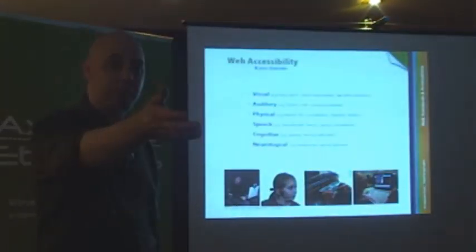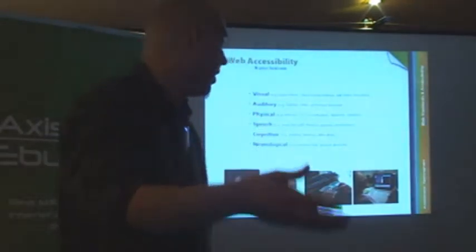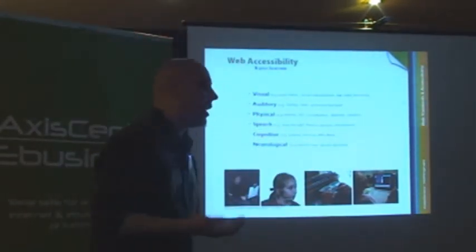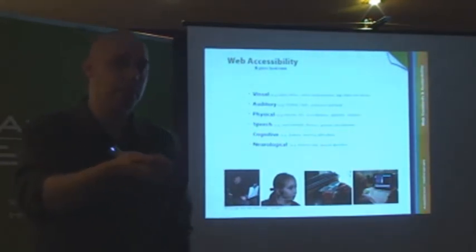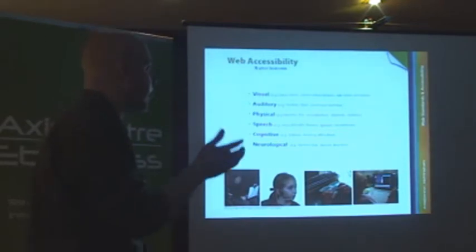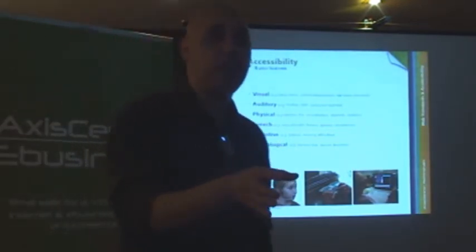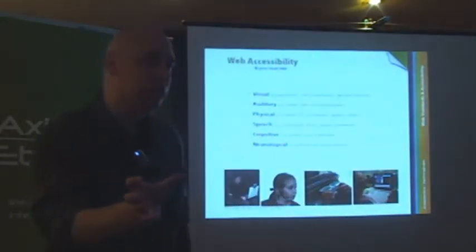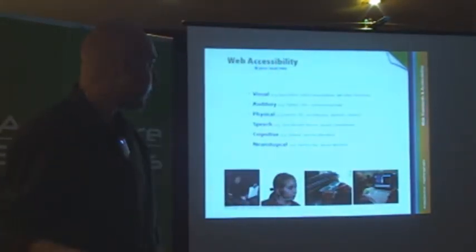It is about making websites more accessible to everybody — which is what Joyce said — keeping in mind that everybody includes people with disabilities. Yes, blindness is one — a visual disability — but blindness ranges from everything from just having blurry vision, colour blindness, and tunnel vision, all the way to full-blown blindness.